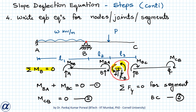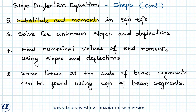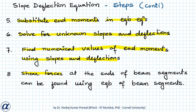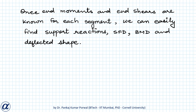Using these three equations, we solve for the unknown slopes and deflections by substituting the end moments from the slope deflection equations into the equilibrium equations. Once the unknown slopes and deflections are known, we find the numerical values of end moments. From the end moments, the end shear forces at each beam segment are found using equilibrium. With end moments and end shears known for each segment, we can easily find support reactions, the shear force diagram, the bending moment diagram, and the deflected shape.